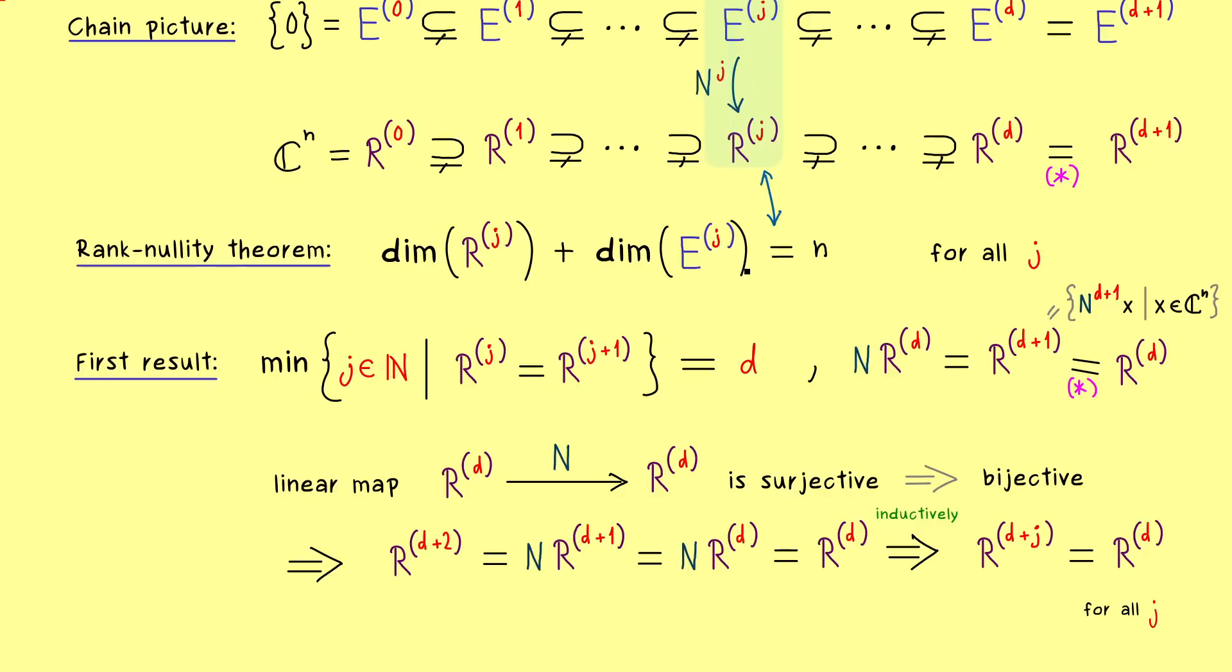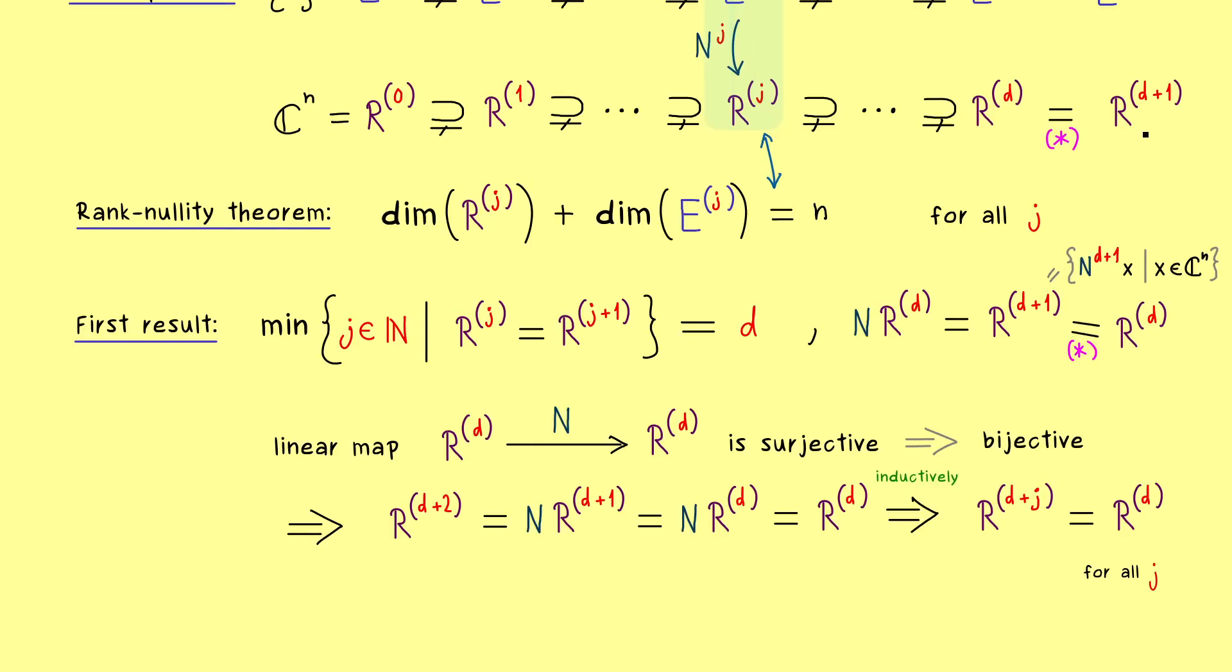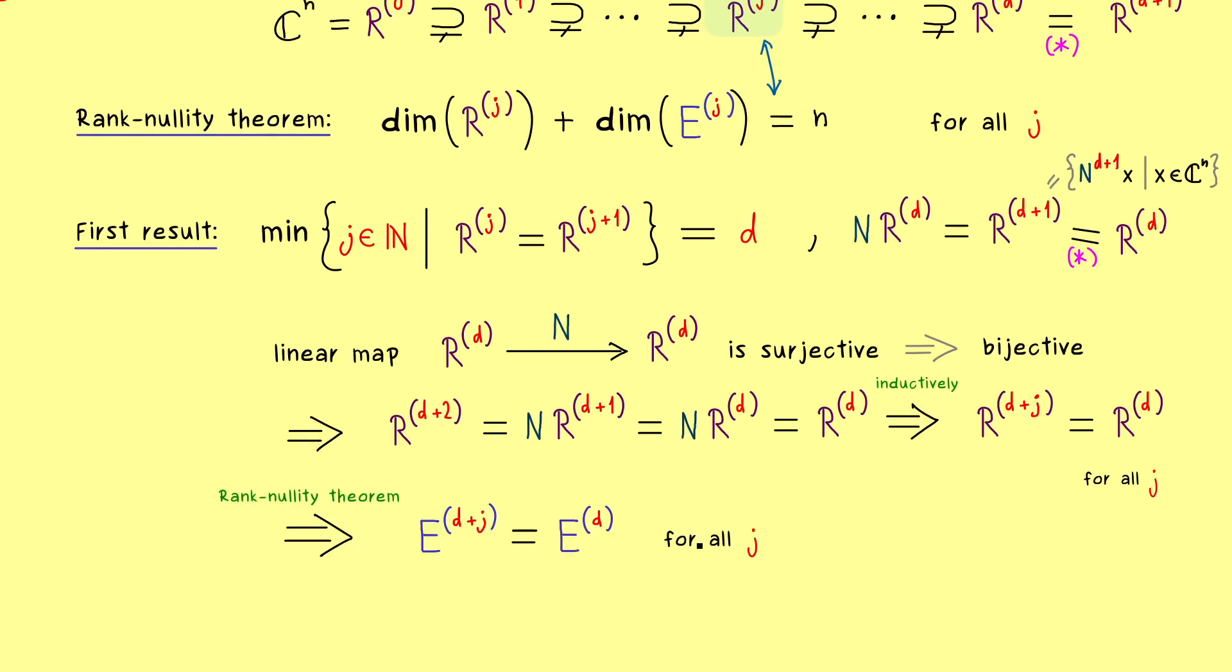Moreover, this result completely translates to our E-spaces as well. Again, the rank-nullity theorem simply tells us that the equalities have to be at the same spots. This is a really nice result because it tells us how our generalized eigenspaces behave. Indeed, now we know the whole chain already ends with the fitting index, which was the minimum anyway.